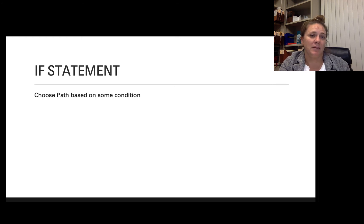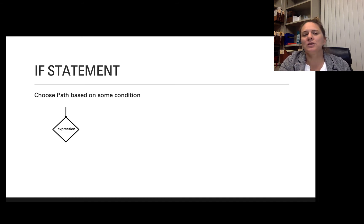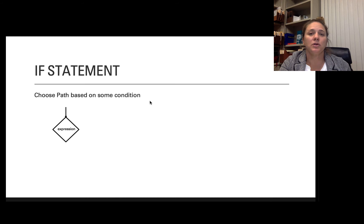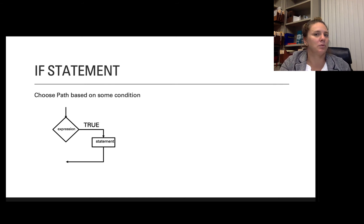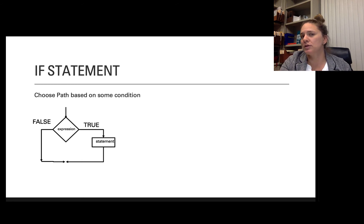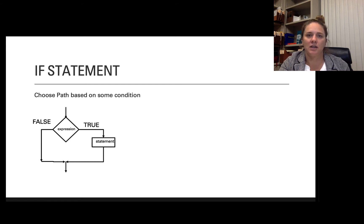I'm going to start with just a simple if statement. An if statement is going to choose a path based on some particular condition. You're going to have an expression, and that expression is going to be either true or false. When your program or flowchart gets to this expression, if it's true it goes down one path and executes some statement or set of statements. If the statement is false, nothing happens — there are no programming steps taken on the false path.